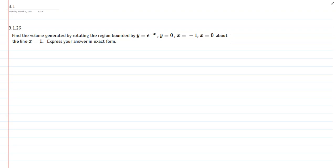So we're going to find the volume generated by rotating this region about the line x equals 1. Let's go ahead and draw that region. So we have y equals e to the negative x.